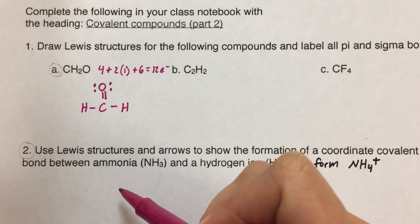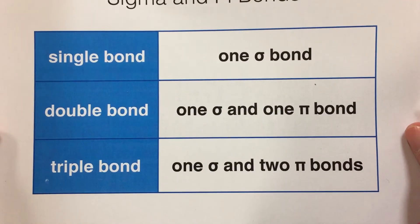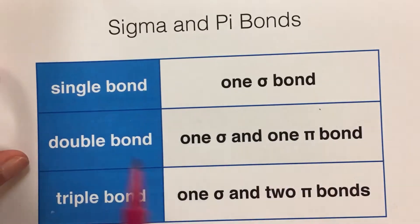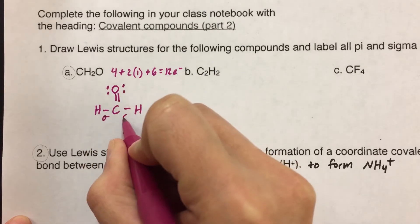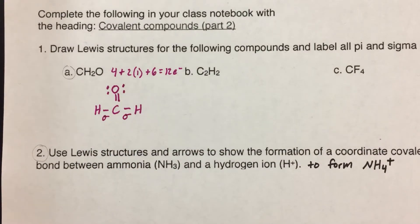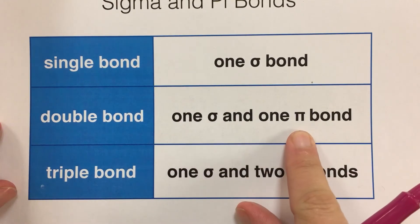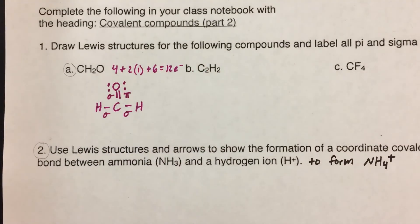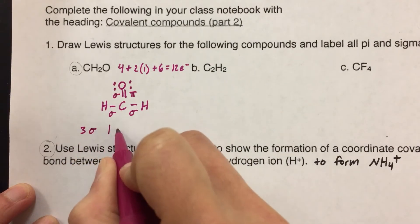Once you have your Lewis structure, use the table to figure out the sigma and pi bonds. Go through each bond and label it as sigma and/or pi. Each single bond is a sigma bond — that's one sigma. So the two C–H single bonds are both sigma bonds. For the double bond to oxygen, a double bond is made up of one sigma and one pi bond. I'll label one side sigma and the other side pi. The totals for this molecule are three sigma bonds and one pi bond.